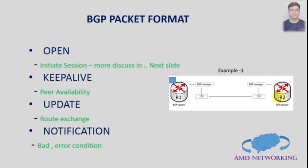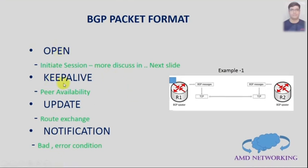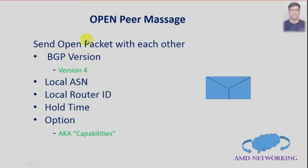In the Open message we can discuss which parameters it sends to Router 2 and which parameters Router 2 agrees upon and sends back to Router 1. Here are the four different packet message formats and four different message types in BGP. The Open message contains the BGP version — version 4 — and the local autonomous system number.